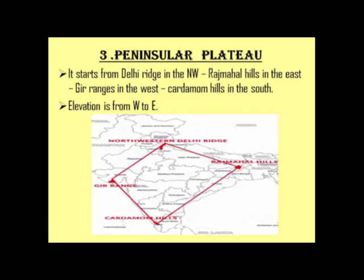The next division is the Peninsular Plateau. It starts from the Delhi Ridge in the northwest, to Rajmahal Hills in the east, and Gir Ranges in the west to Cardamom Hills in the south. The term 'Peninsular' means three sides are surrounded by water — in India's case, the West, East, and South are surrounded by water. 'Plateau' means a high plane or tableland.